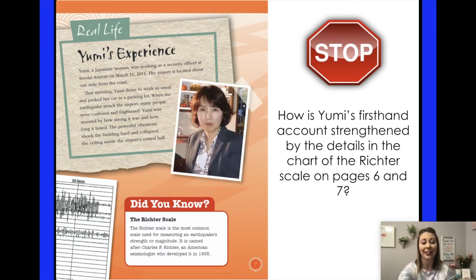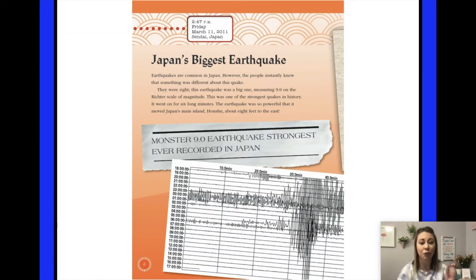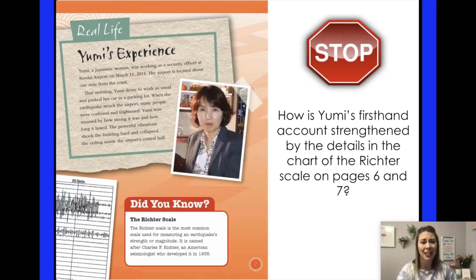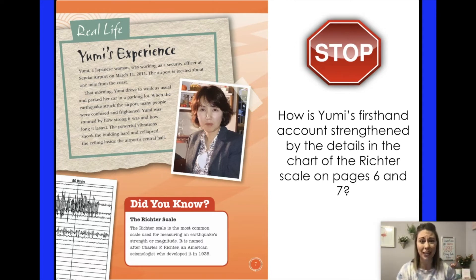Our question is: How is Yumi's firsthand experience strengthened by the details on the Richter scale chart on pages 6 and 7? She drove to work like normal, but was stunned by how strong and how long the earthquake lasted. The powerful vibration shook the building hard and collapsed the ceiling inside the airport's central hall. When looking at the Richter scale picture, we can see how powerful this earthquake actually is. Putting these details together — I see on the Richter scale this is huge, and she was stunned at how powerful and long this earthquake lasted. I can tell this earthquake was really bad.